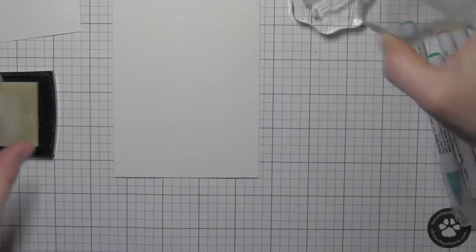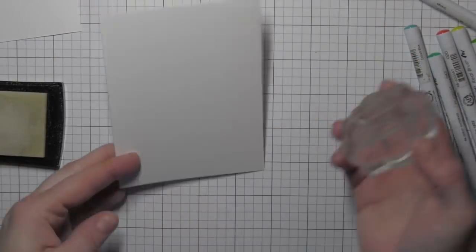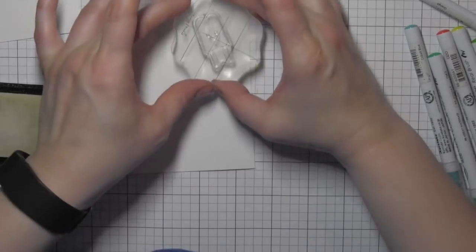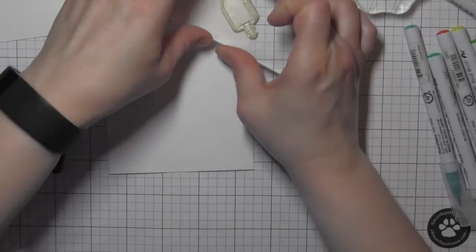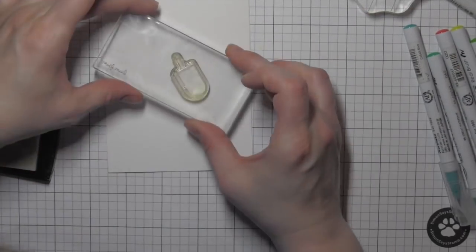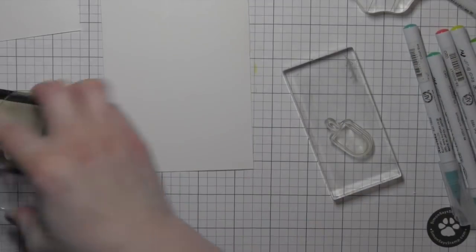From the Here's the Scoop and Best Pun Ever stamp sets, using Versamark ink and then sprinkling them with some white embossing powder. So I stamped a bunch of them. I know it's hard to see here in the video.